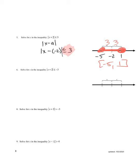The next example asks for values of X such that the absolute value expression is less than negative three. Remember, absolute value means distance. Can I ever be a negative distance away? No. So there is no solution to this problem — I can never find a value of X that is a negative distance away.